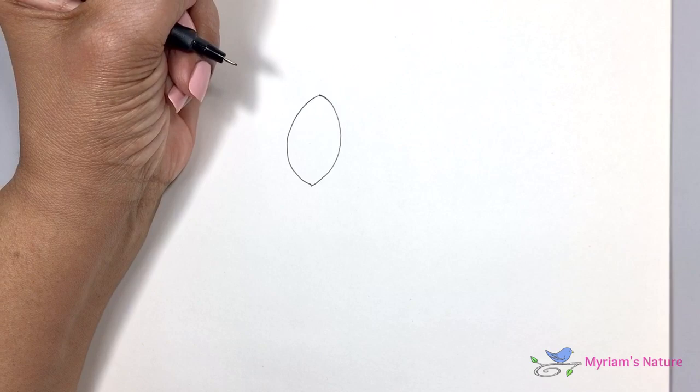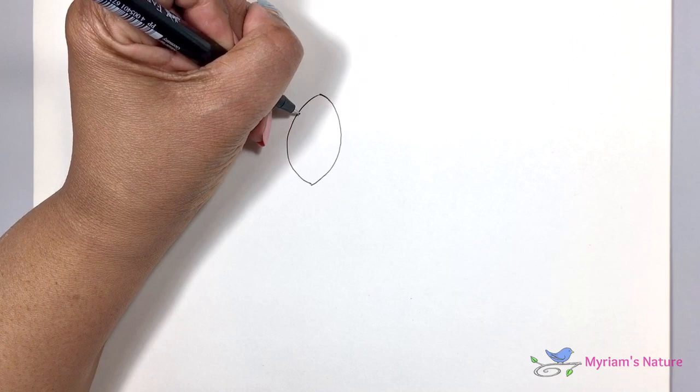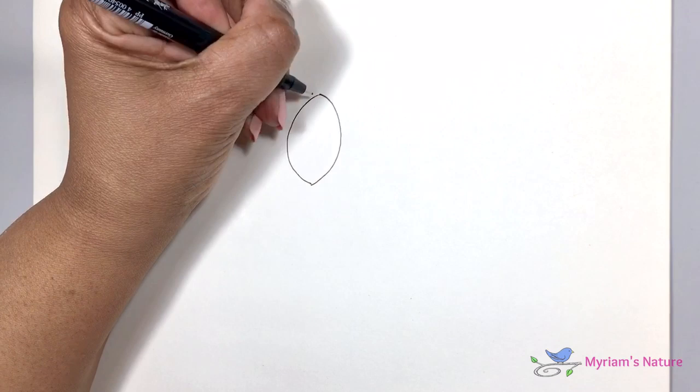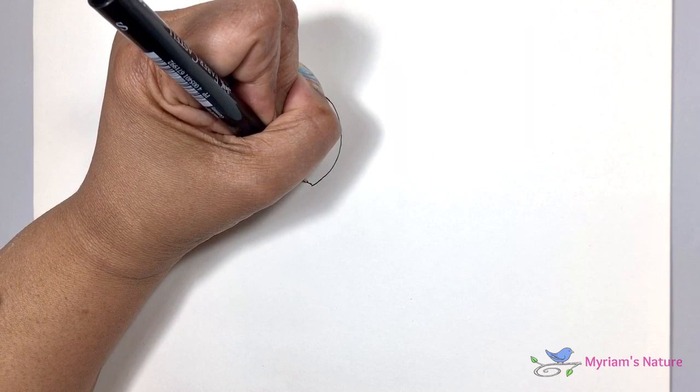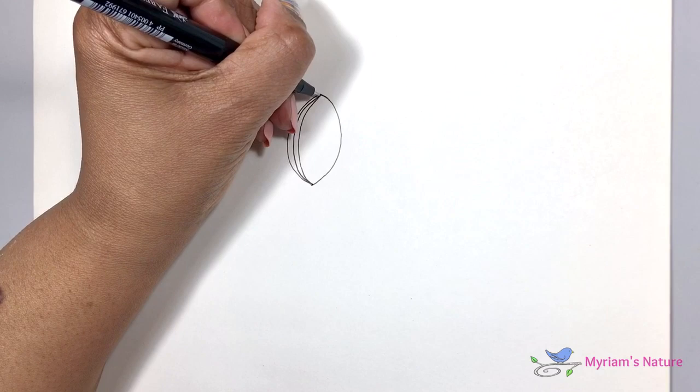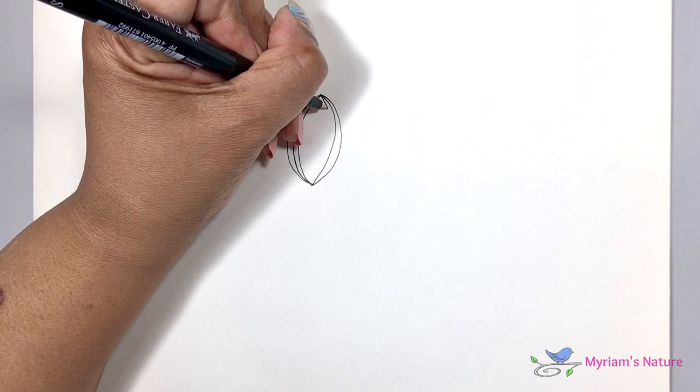And then to fill it in, I'm going to draw lines, again, always starting at the same beginning and ending at the same end, and running alongside the first ones. You can choose to do it all in this direction, or you can alternate. That part is entirely up to you.